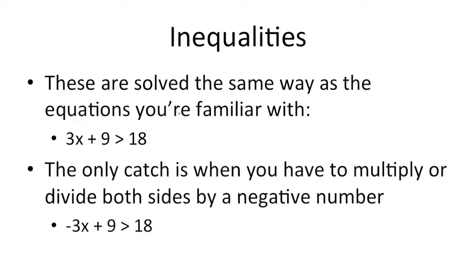So moving on to inequalities. You can solve these the same way that we've solved the previous equations. All you have is a greater than, less than, greater than or equal to, or less than or equal to sign instead of an equal sign. So for this case, 3x plus 9 is greater than 18. All we need to do is isolate the variable. Subtract 9 from both sides: 3x is greater than 9. Divide both sides by 3 and we get x is greater than 3. The only catch when dealing with these types of problems is when you divide or multiply both sides by a negative number, you need to flip the sign — if it's a greater than sign, you need to make it a less than, or vice versa.